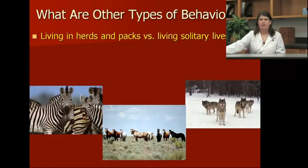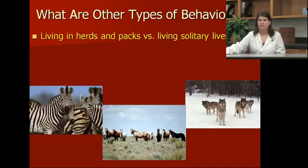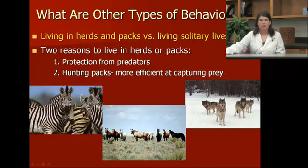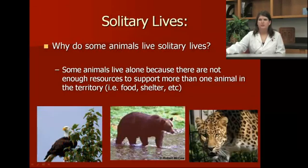What are some other types of behaviors? In the wild, animals either live in herds or live in solitary packs. There are two reasons to live in a herd or a pack: one, protection from predators, and two, hunting packs offer a more efficient way of capturing prey. Some animals live alone because there's not enough resources or prey in the area to support more than one animal.